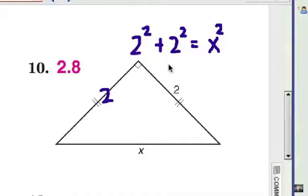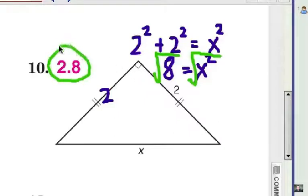We're going to take the square root of each side. And x is going to be the square root of 8 which is about 2.8.